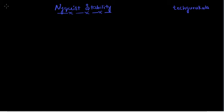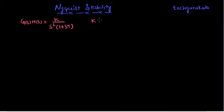In this video, we are going to see the Nyquist stability criterion for a particular problem. The open loop gain G(s)H(s) is given as k over s squared times (1 + sT). We want to find the range of values of k for which the closed loop system is stable. We can do this by using the Nyquist stability criterion.